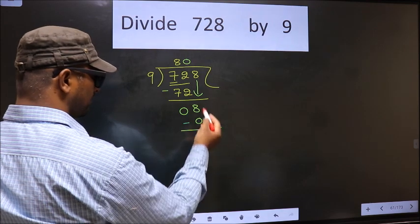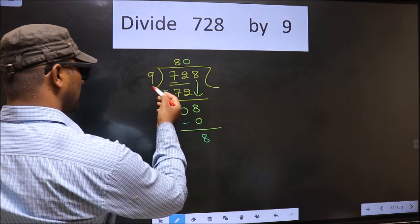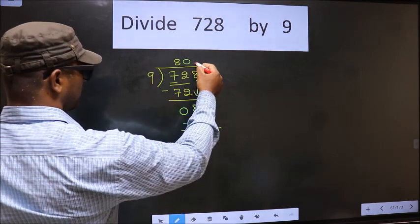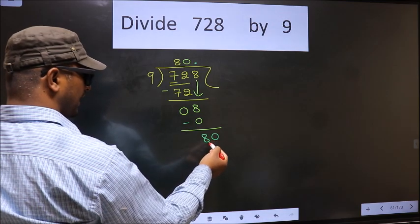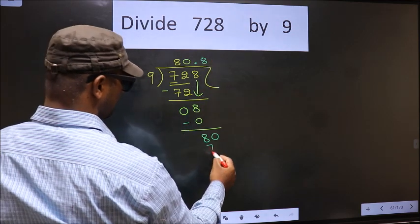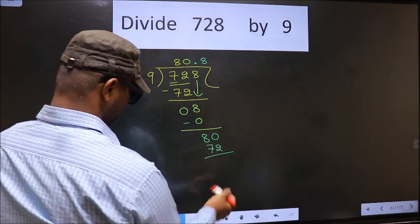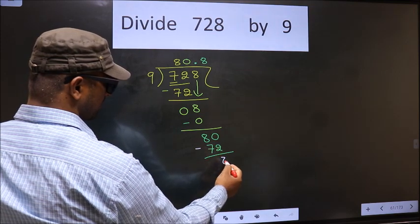Over here we did not bring any number down, and 8 is smaller than 9. So, now we can put a dot and take 0 here. Now, here 80. A number close to 80 in the 9 table is 9 times 8 is 72. Now, you subtract. 80 minus 72 is 8.